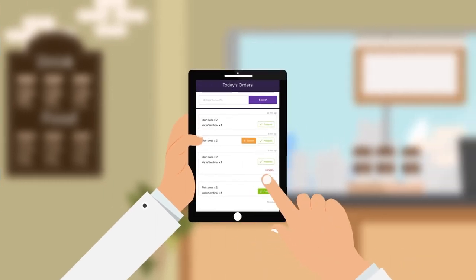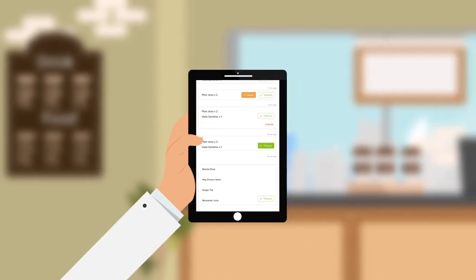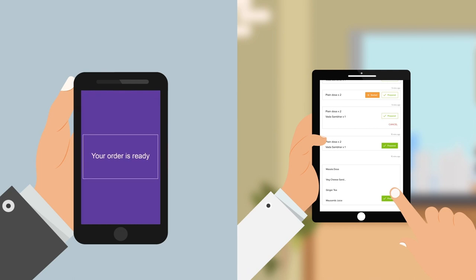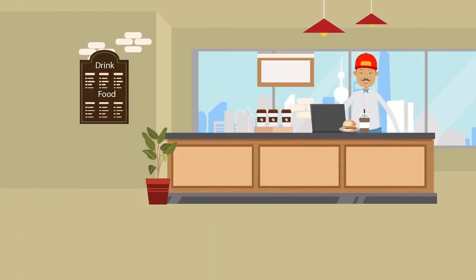His order is automatically sent to the kitchen and flashes on the order screen. Once the food is ready, the chef taps on the prepared button and Josh immediately receives a notification to collect his food. Josh happily heads to the cafeteria and directly collects his meal, piping hot just the way he likes it.